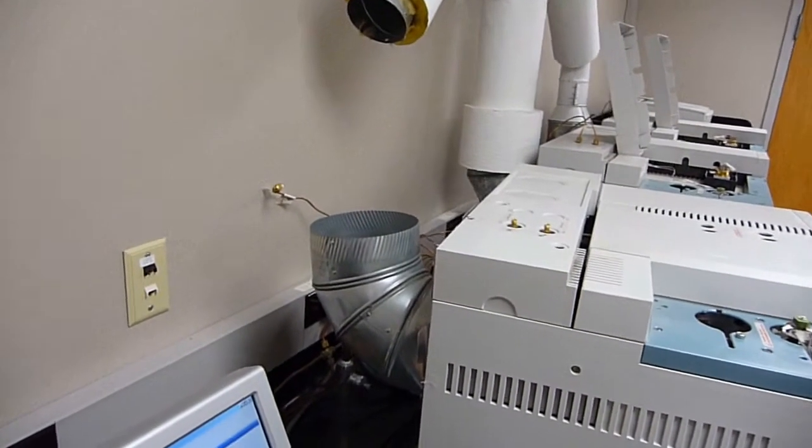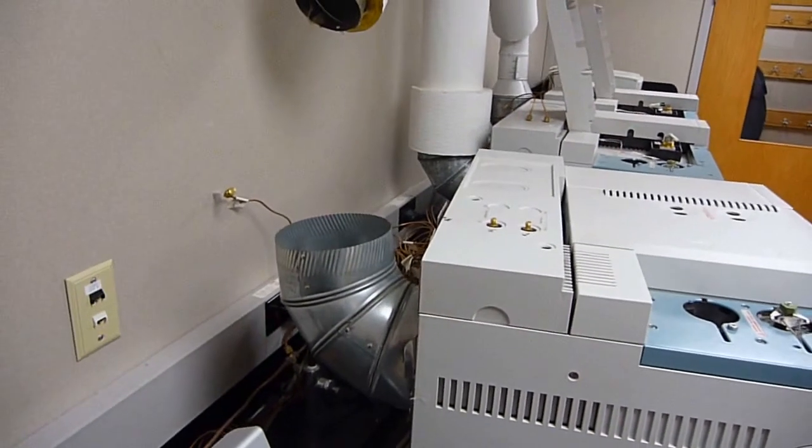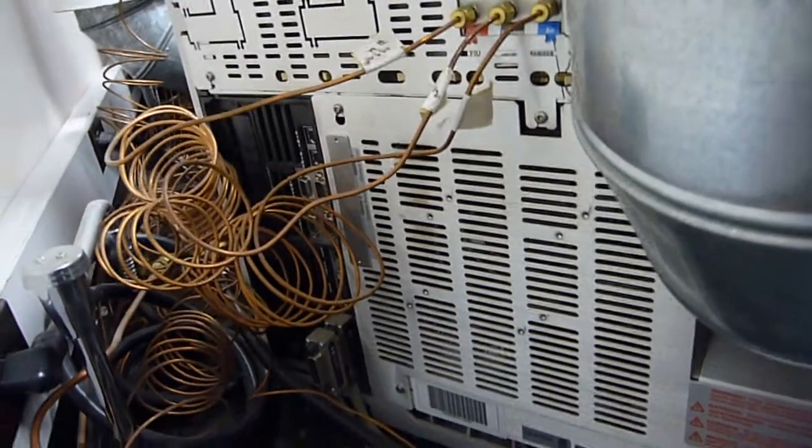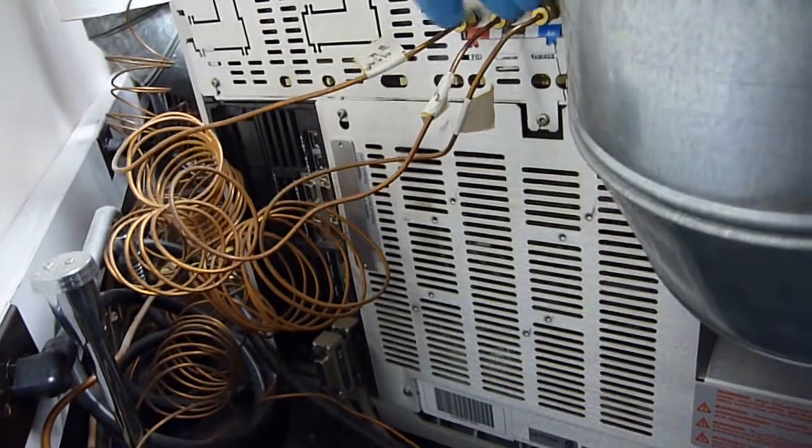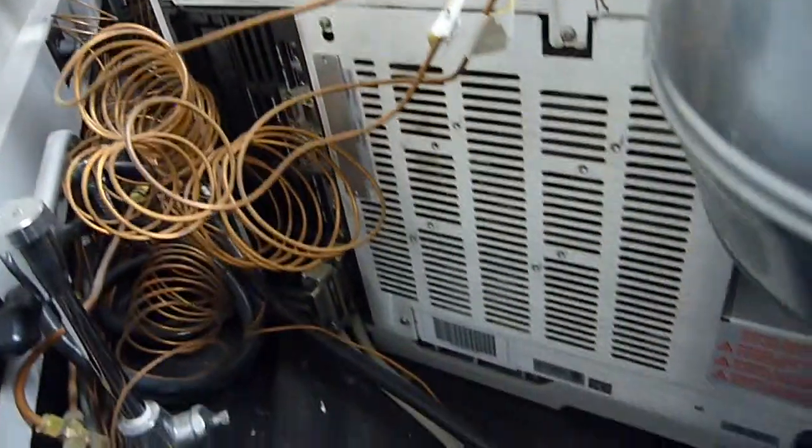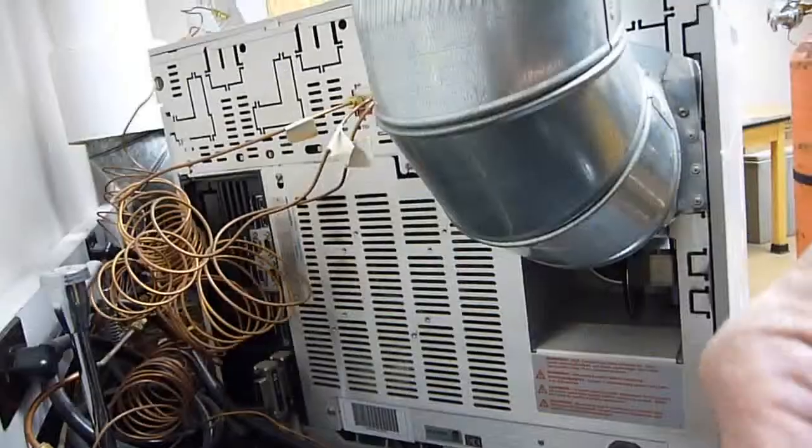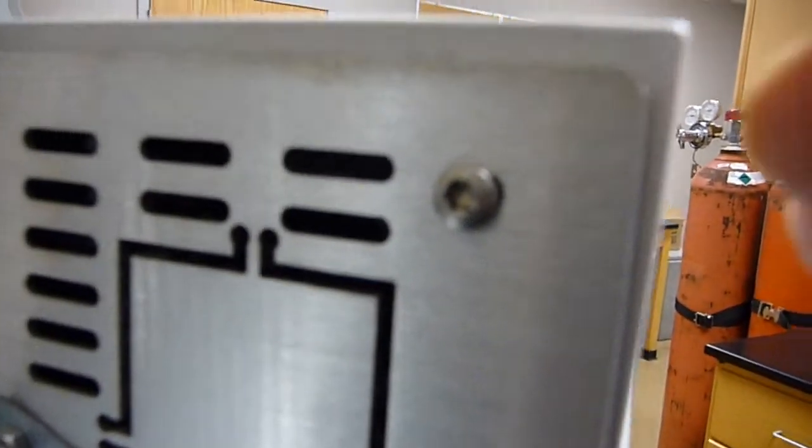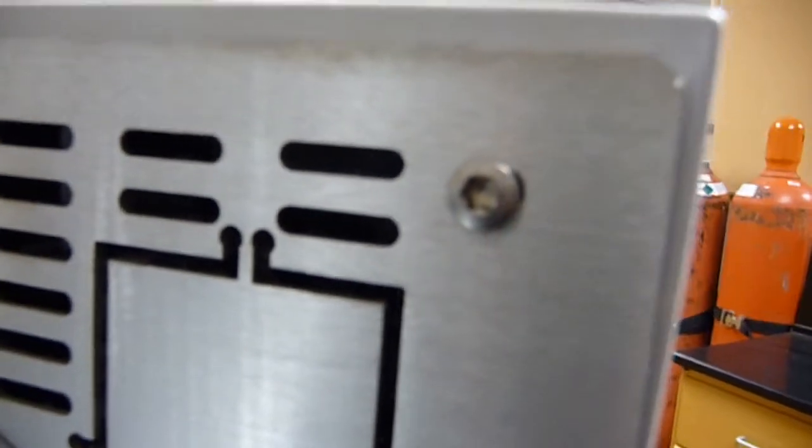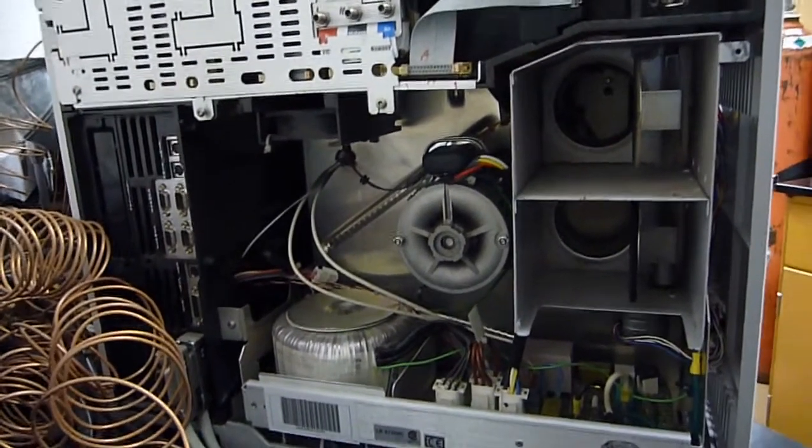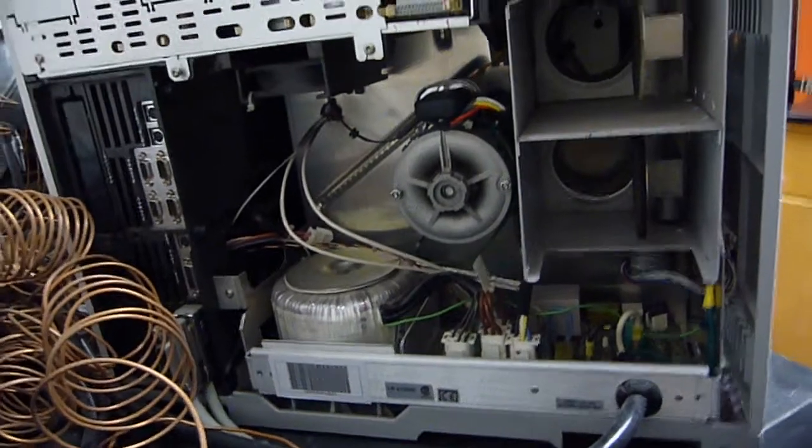And next we will reposition the GC to work on the back. But before doing that, I want to remove and cap these gases to the FID. And of course, unplug the power. So what we have to do is take the back panel off of here, and as usual, Hewlett Packard, so these are T20 screws.